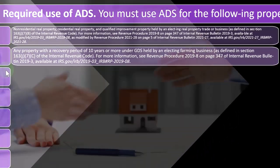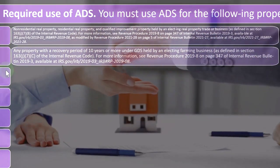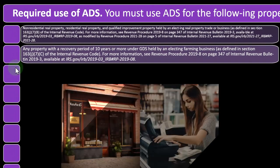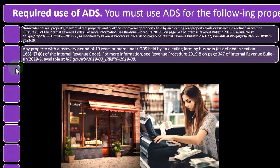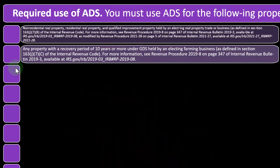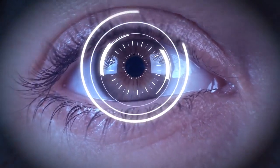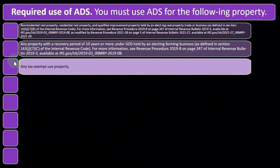Any property with a recovery period of 10 years or more under GDS held by an electing farming business — farming operations often have these kinds of exceptions — as defined in section 163J(7)(C) of the Internal Revenue Code. For more information, see Revenue Procedure 2019-8. We'll focus on the more normal calculations for most people and won't deviate too much into special circumstances, but you can research those on your own.